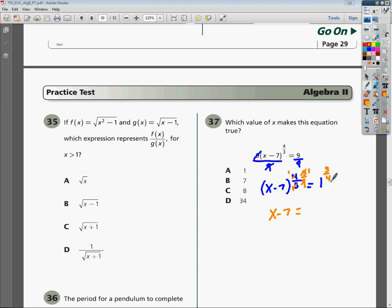Well, the way you write 1 to the 3/4 power as a radical, the number on the bottom, or the denominator, that's technically the root that it should be raised to, or the root that it should be to, so this is technically a fourth root.